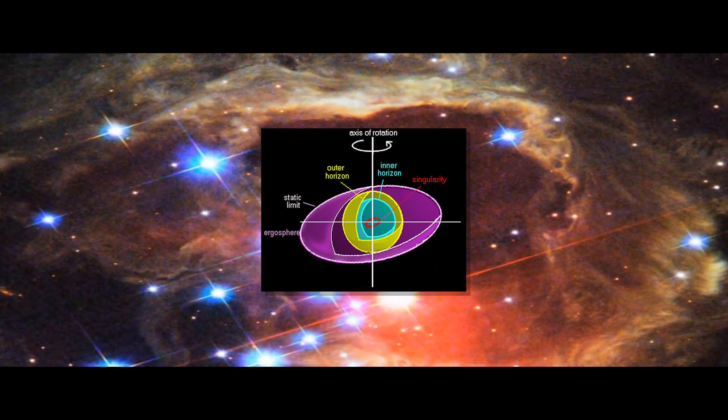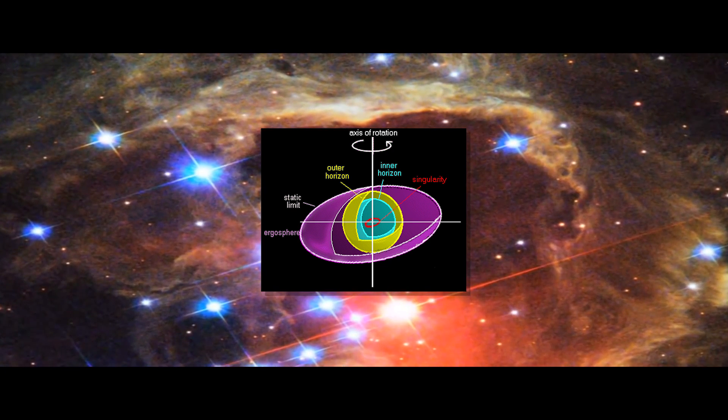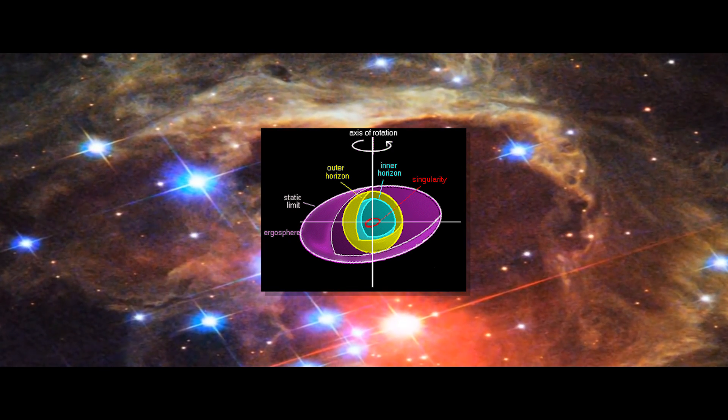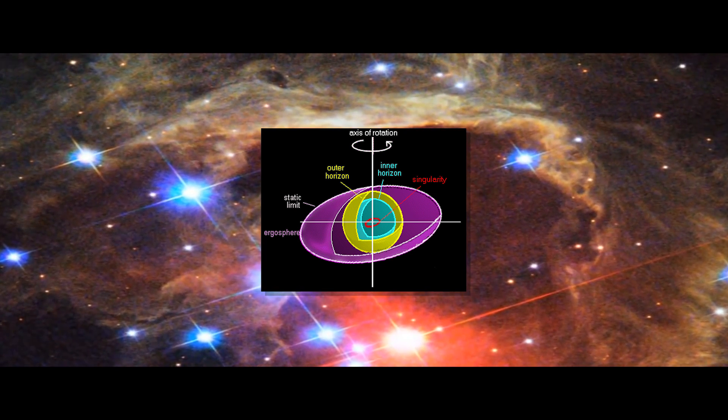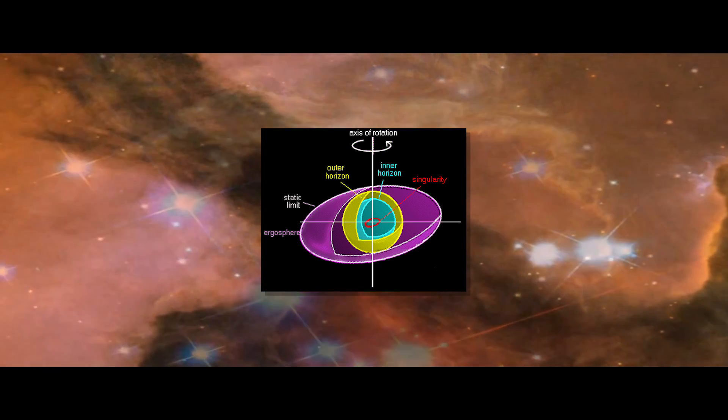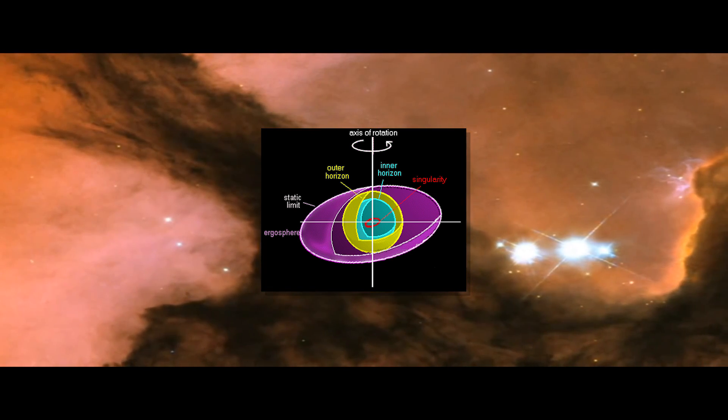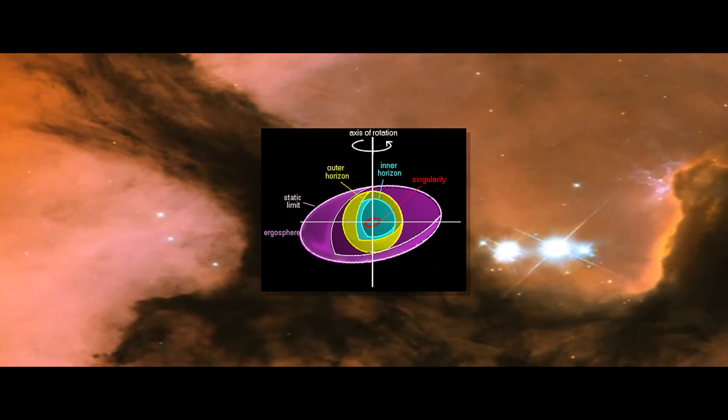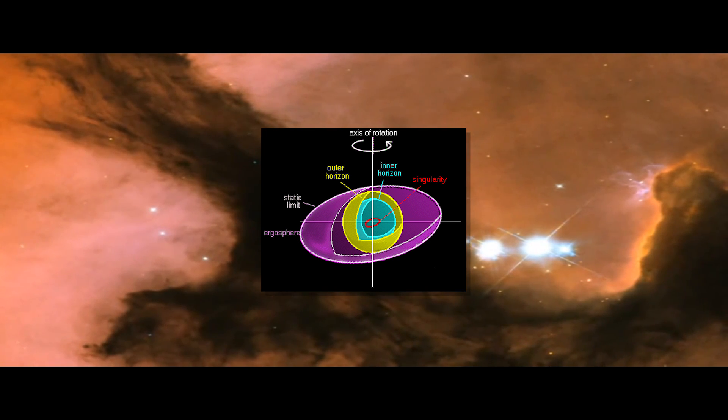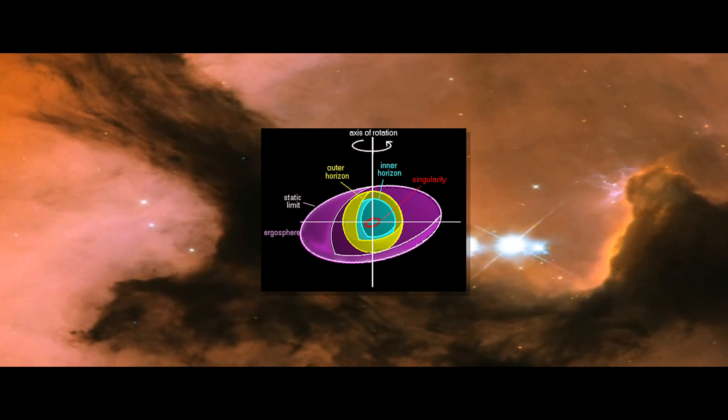But more interesting yet, the rotation of the black hole creates what can be imagined as a swirling effect, twisting space and time itself around the black hole. This twisting effect just outside the event horizon kind of is the ergosphere, like a ball squeezed between two flat surfaces.